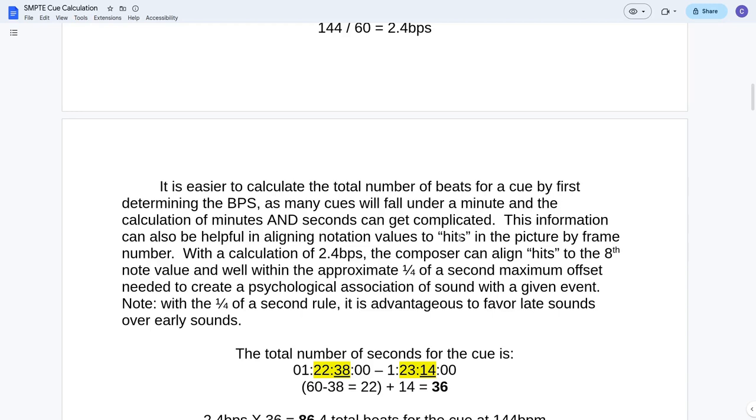This information can also be helpful in aligning notation values to hits in the picture by frame number. With a calculation of 2.4 beats per second, the composer can align hits to the eighth note value while within the approximate one quarter of a second maximum offset needed to create a psychological association of sound with a given event. So your hit doesn't have to be on a beat. It could be on the end count halfway through a beat.